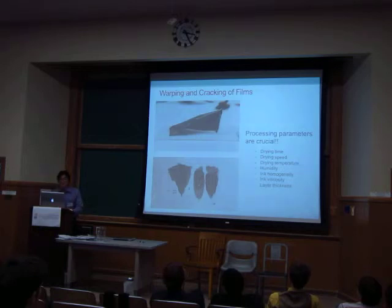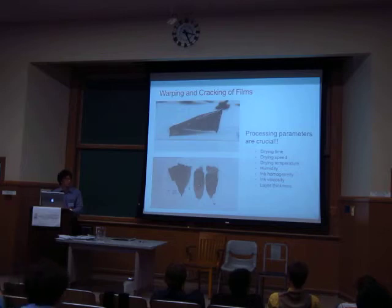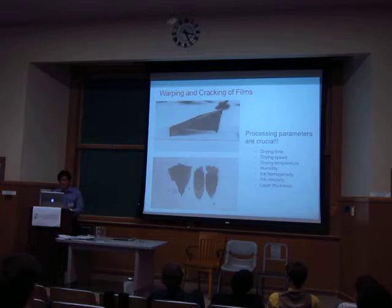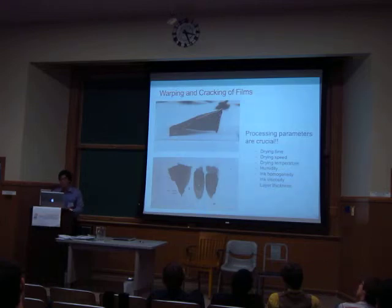One very significant issue I had while trying to cast and print these was crossing parameters. The seven parameters shown — drying time, substrate temperature, humidity, ink batch homogeneity, viscosity composition, and cast layer thickness — all played a part in how well the films dried. You can see some failed results here. If the humidity was too high or if it dried too long, they twisted and warped like a Pringle. If the ink was too dry when a second layer was cast on, the top layer ended up cracking. So there were a lot of difficulties with this.